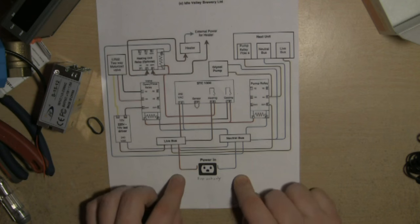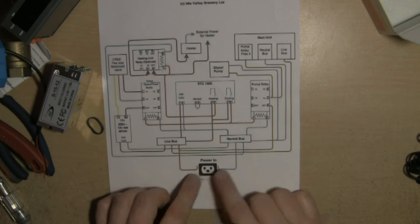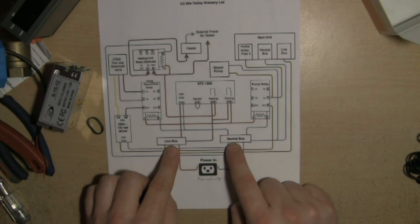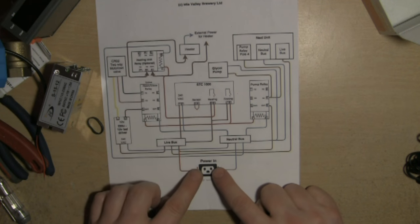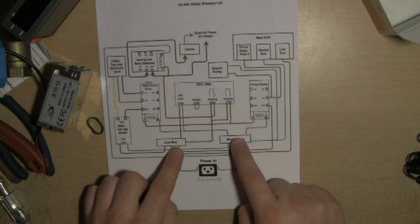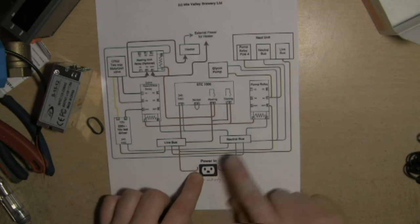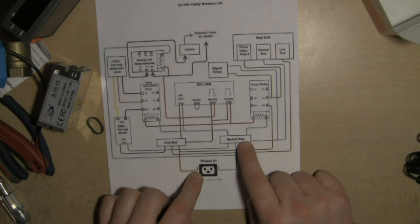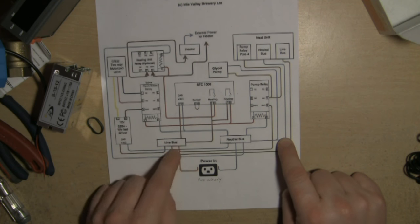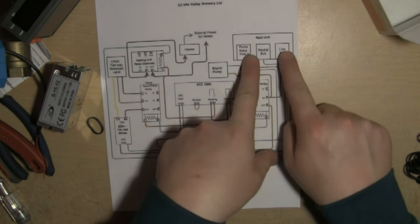For the first unit, you obviously need your power coming in. We have a live bus bar and a neutral bus bar, and we've got live and neutral coming into those respectively. For the next unit, you don't need the power in because you're daisy chaining off of these bus bars.